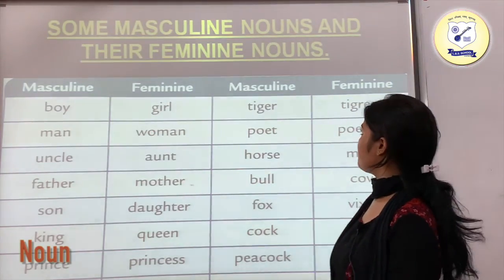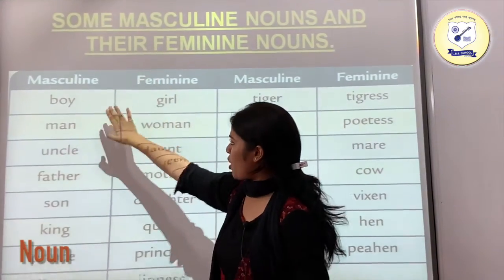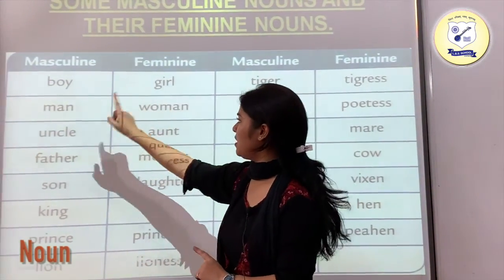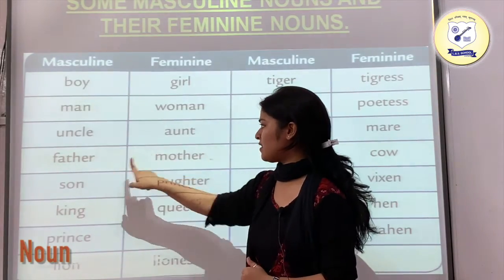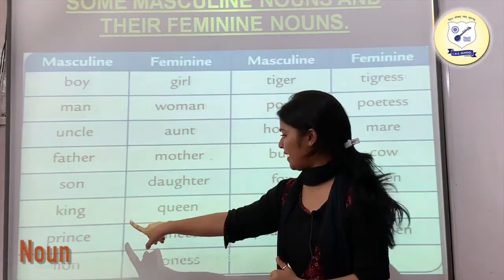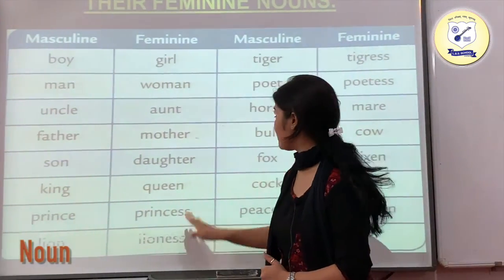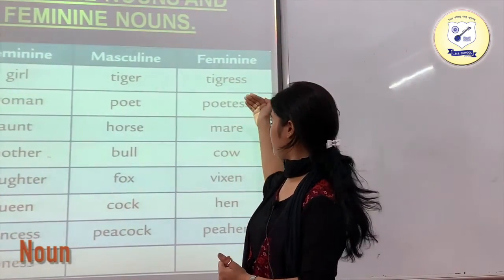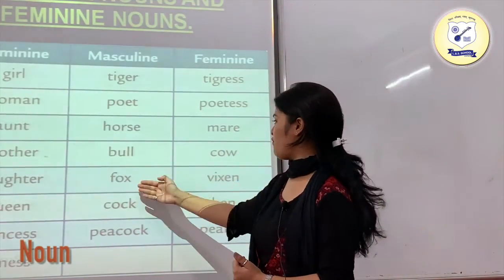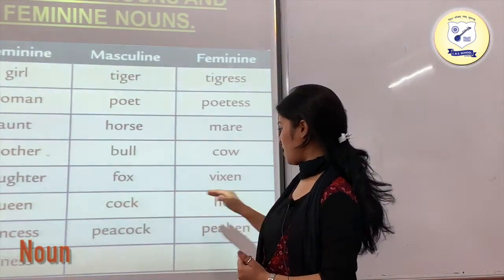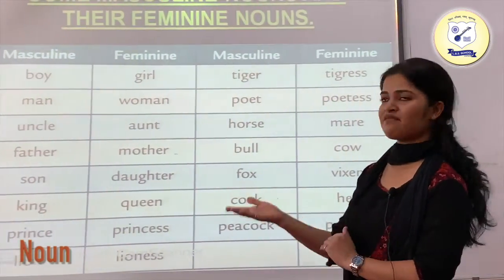Here are examples of masculine nouns and their feminine counterparts: boy/girl, man/woman, uncle/aunt, father/mother, son/daughter, king/queen, prince/princess, lion/lioness, tiger/tigress, poet/poetess, horse/mare, bull/cow, fox/vixen, cock/hen, peacock/peahen. These are examples of masculine and feminine genders.